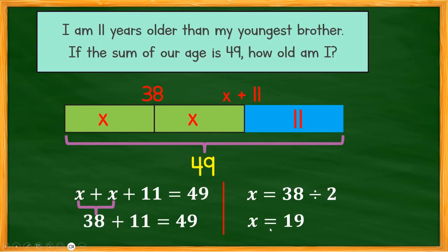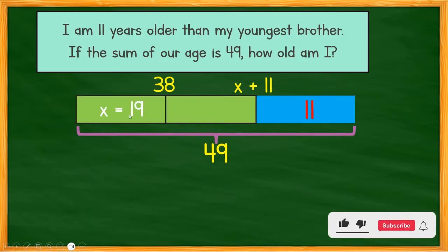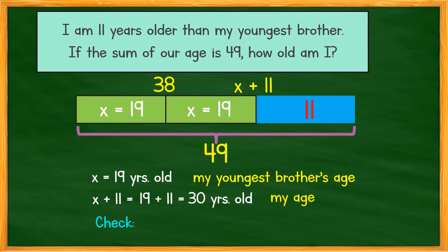Therefore, the value of X — my brother's age — is 19. And my age is 19 plus 11, which equals 30 years old. To check: 19 plus 30 equals 49, which is the sum of our ages. Correct!